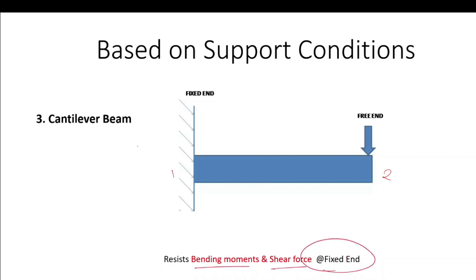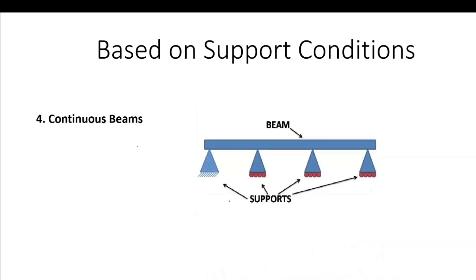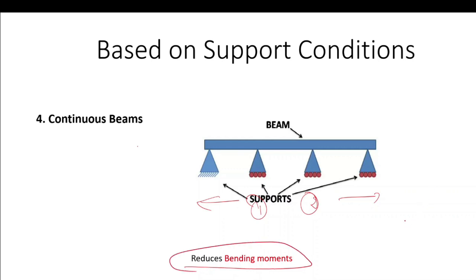If a beam extends over more than two supports, then it is called a continuous beam. The basic characteristic of a continuous beam is that it reduces bending moments due to its continuity over multiple supports.